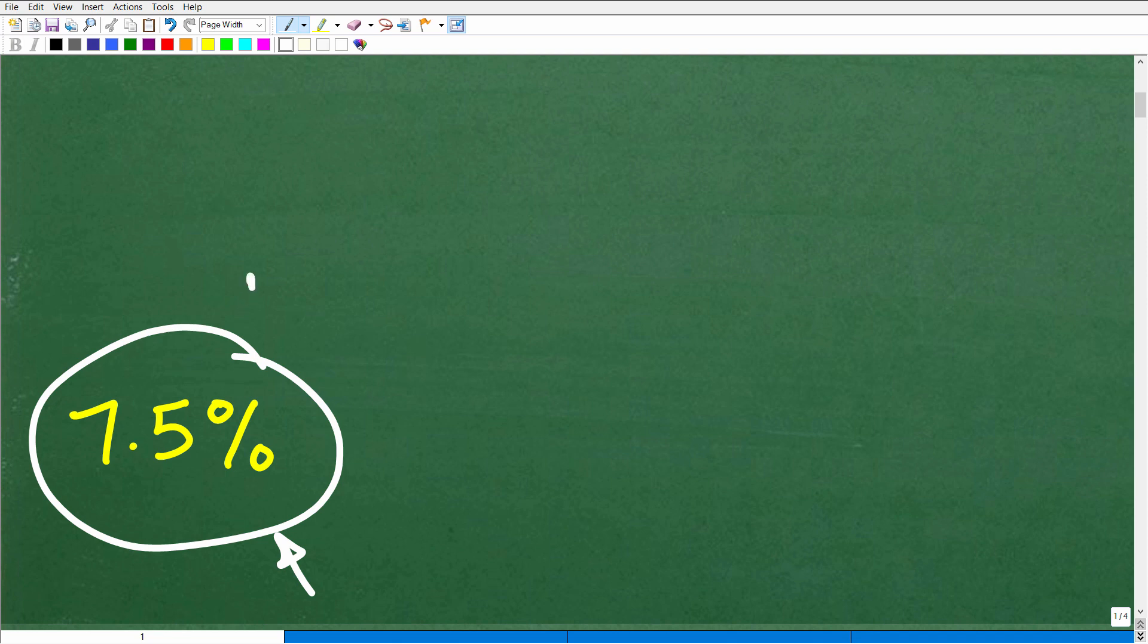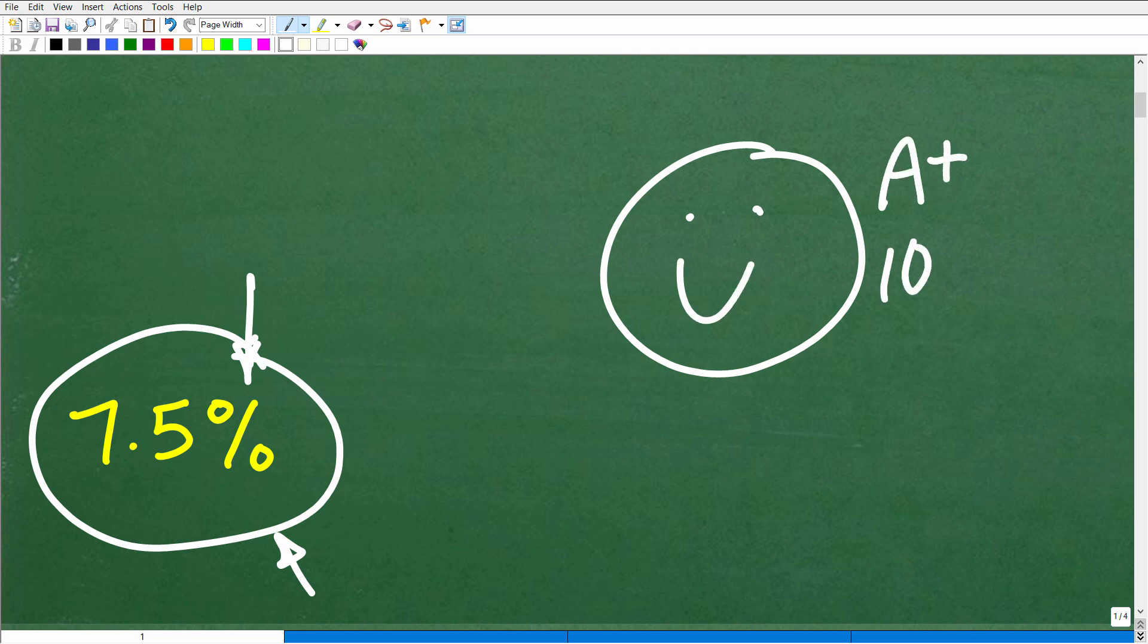So again, you want to express your answer in terms of percent. But if you got this right, that is fantastic. Let's go ahead and celebrate by giving you a nice little happy face, an A plus, a 100%, and multiple stars. So you can tell your friends and family that indeed you can help them figure out simple interest problems.